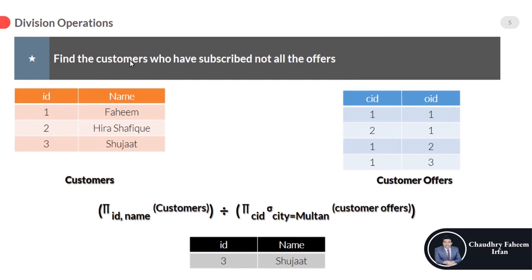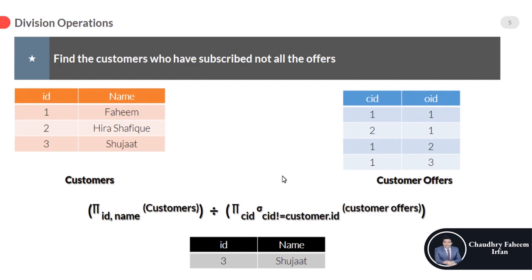The second example: find the customers who have subscribed to not all the offers or no offers. By using these two tables we can perform division operation. Here is the customers table and here is the customer offers table. By using projection operation we can select specific columns, id and name, from the customers table. By using projection we can also select customer id from the customer offers where customer id is not equal, and then perform this operation.